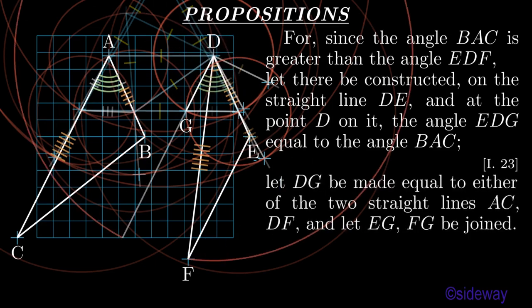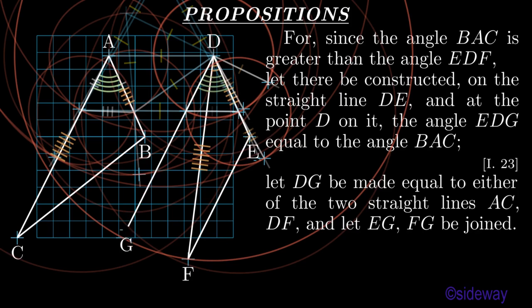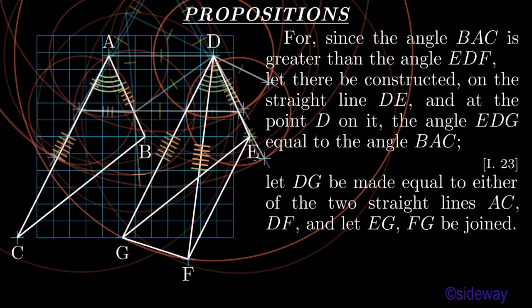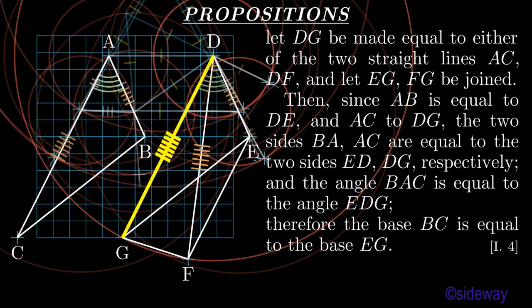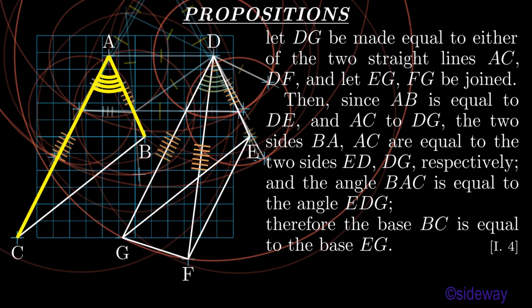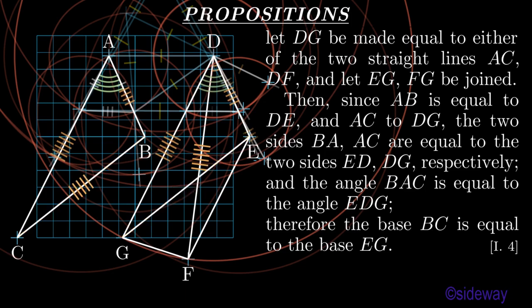Let DG be made equal to either of the two straight lines AC, DF, and let EG, FG be joined. Then, since AB is equal to DE and AC to DG, the two sides BA, AC are equal to the two sides ED, DG respectively. And the angle BAC is equal to the angle EDG. Therefore the base BC is equal to the base EG, by Book 1 Proposition 4.